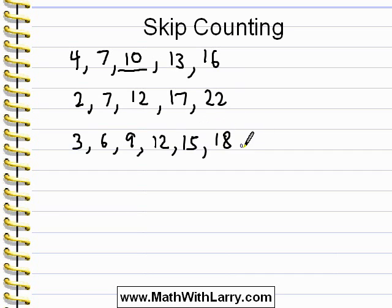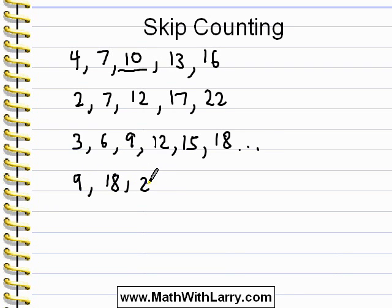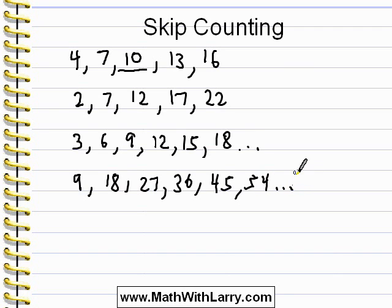Let's try listing multiples of 9. We have 9, 18, 27, 36, 45, 54, and so on. There's actually an interesting pattern: if you look at the digits in all of these multiples of 9, the digits always add up to 9. So that's a trick that can help you remember them.